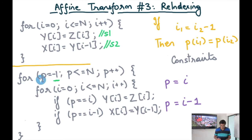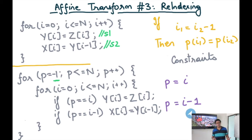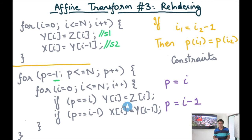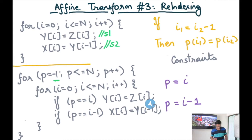Here is the generated code from my simple code generator. I basically have my outer loop on p, which is the processor space. The lower bound of the processor space is minus 1 because that's the lowest value that p can take — since for S2 I have p equals i minus 1, and the lowest value i can take is 0. The largest value that p can take is n, coming from p equals i. Then I just paste the original program as the body of this loop, except that I predicate each statement: if p equals i, only then execute y_i equals z_i; if p equals i minus 1, only then execute x_i equals y_{i-1}.